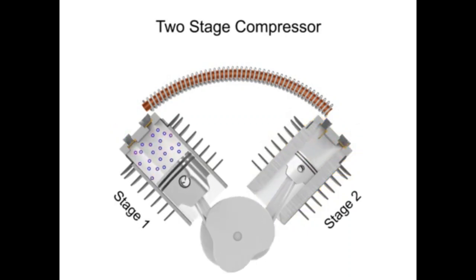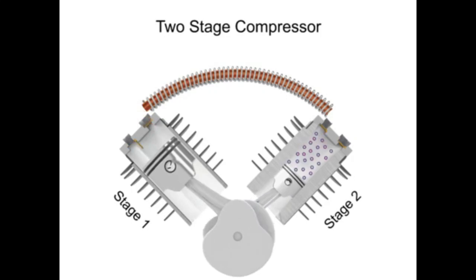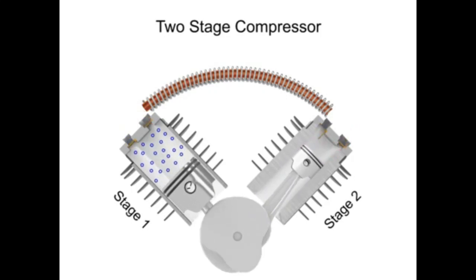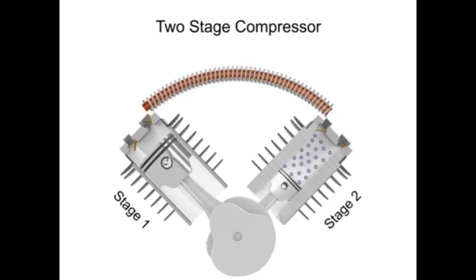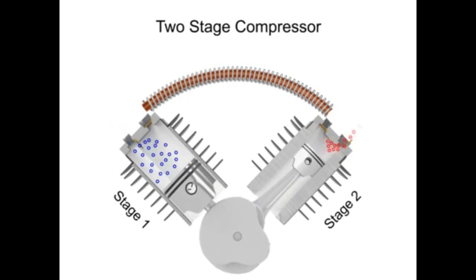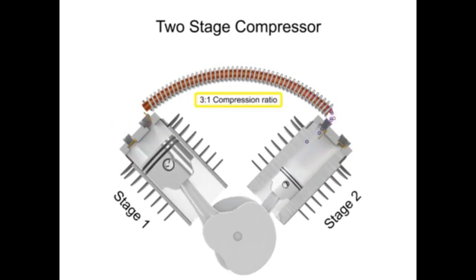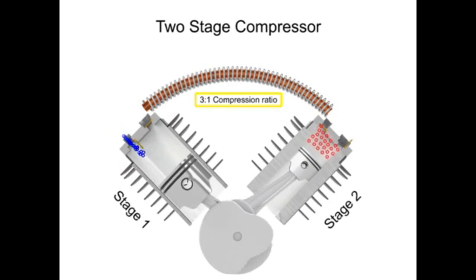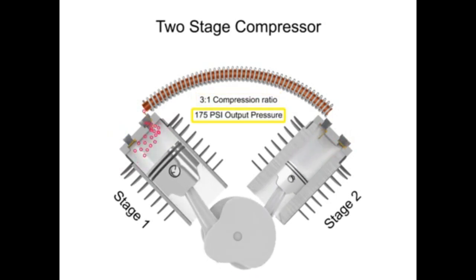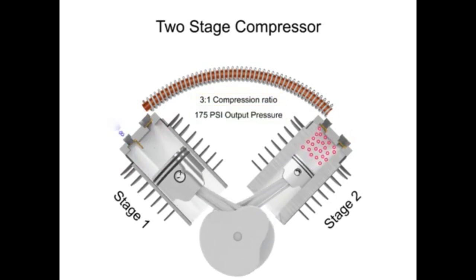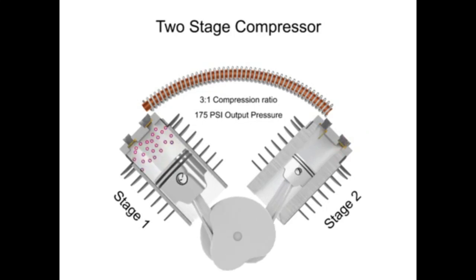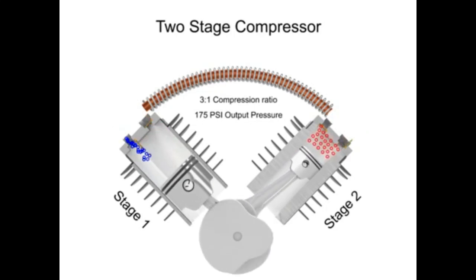The compressed air entering the second stage is sometimes called supercharged air. Two-stage compressors have a compression range of 3 to 1 or even less per stage, but can operate up to 175 PSI. They can also deliver more air at a higher pressure than single-stage compressors of the same horsepower.